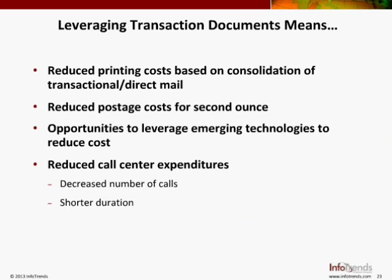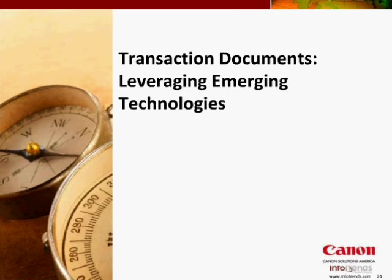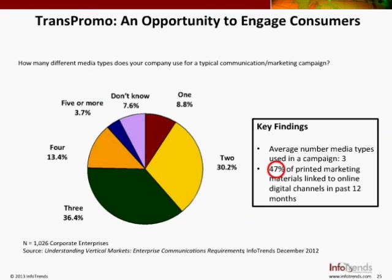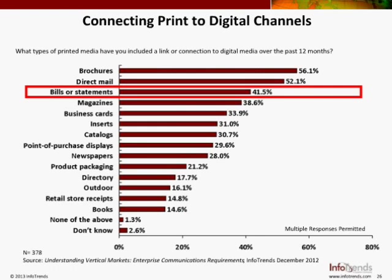One of the more interesting findings when we surveyed a number of peers in the industry is that corporate enterprises average use of three types of media to engage customers. The big message is that peers in the industry are using that printed document to link into online or digital channels. In fact, 47% of all printed material produced in the past 12 months points a client at a digital channel. When we asked which printed documents they were using to move people across channels, bills or statements was clearly critical in moving people to online channels.